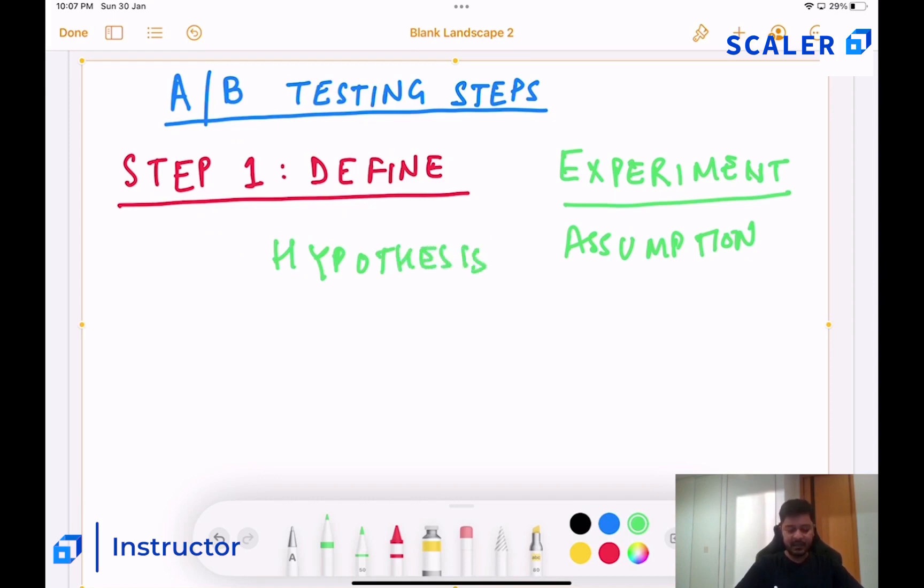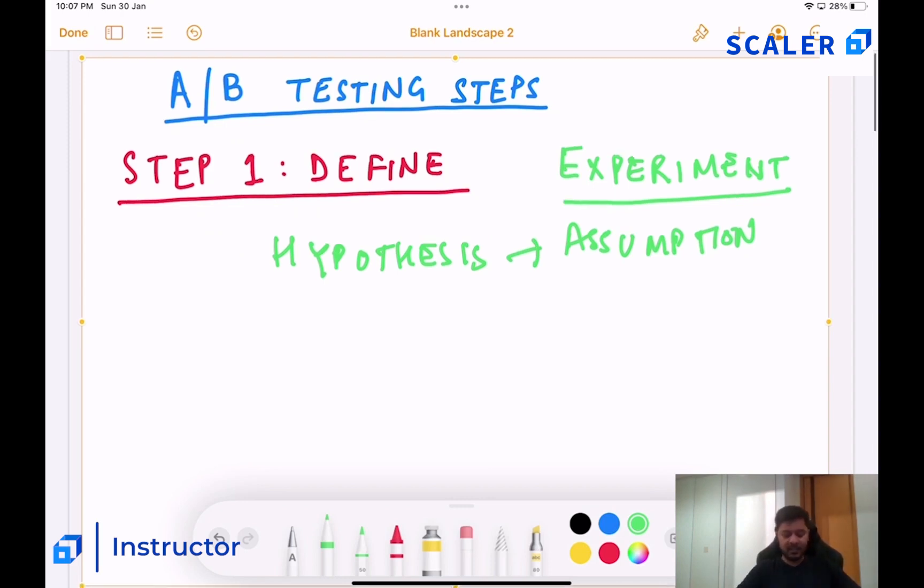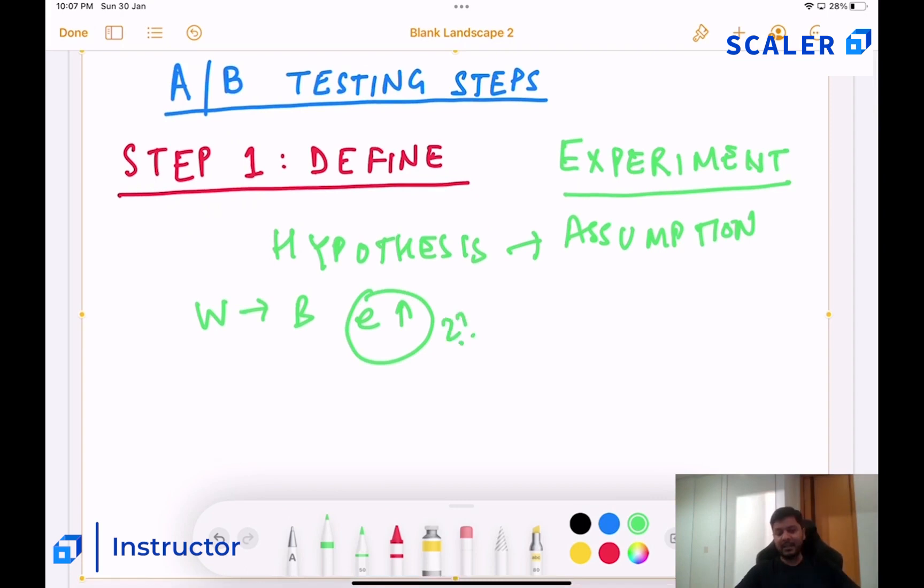Such a formalized assumption in the field of statistics is often termed as a hypothesis. That is why we have something called hypothesis testing in AB testing experimentation. So it is a part of AB testing. A hypothesis is nothing but a formalized assumption. So our hypothesis here is that changing the background from white to blue will drive up engagement. We need to determine what exactly do we mean when we say engagement. What is exactly engagement? We need to determine that. That's really important.